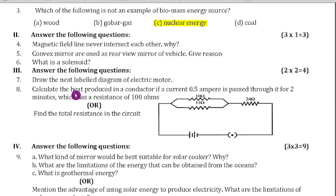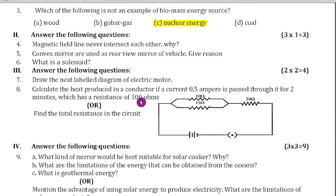Third section: answer the following questions, 2 marks each. There are 2 questions. Seventh question: draw the labelled diagram of an electric motor. Next, calculate the heat produced in a conductor if a current of 0.5 amps is passed through it for 2 minutes and it has a resistance of 100 ohms. Alternatively, by seeing the circuit, you have to calculate the total resistance using series-parallel connections.